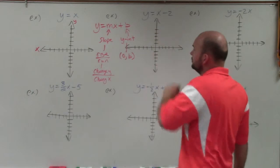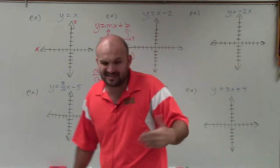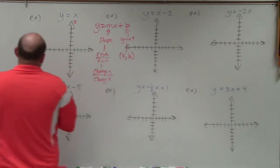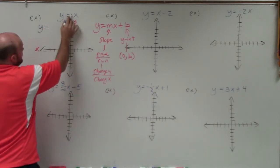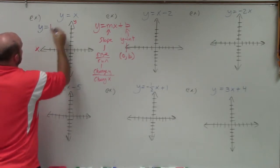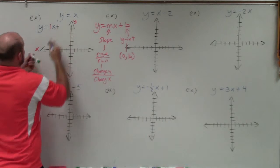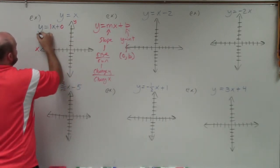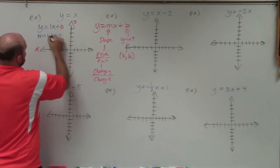Let's look at y equals x. A lot of students will say that's not slope-intercept form, but technically it is. We need an m, which is the coefficient of x — so that's 1x. And the y-intercept is plus 0. So m equals 1 and b equals 0.